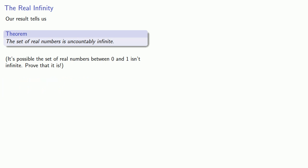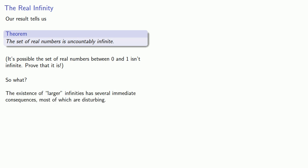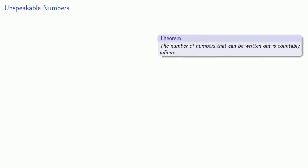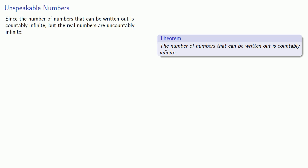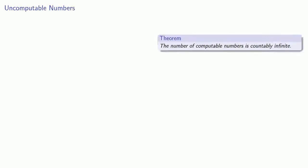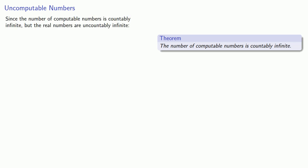I've taught this topic for many years, and the general reaction to this stunning result is: so what? We have some sets that are infinite and some sets that are countably infinite — who cares? But the existence of larger infinities has several immediate and disturbing consequences. We showed that the number of numbers that can be written out is countably infinite, but the real numbers are uncountably infinite — which means there are real numbers we cannot write out. We also showed that the number of computable numbers is countably infinite, so there are real numbers whose values cannot be computed.